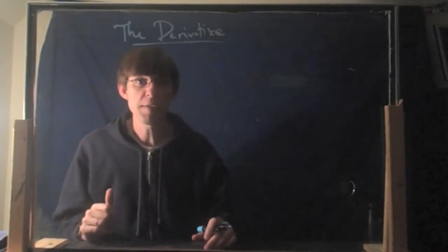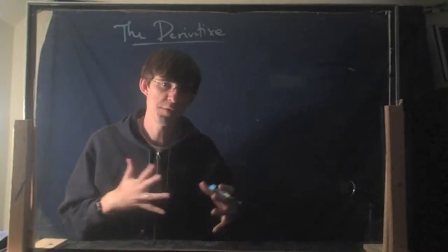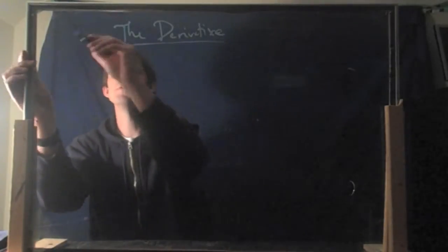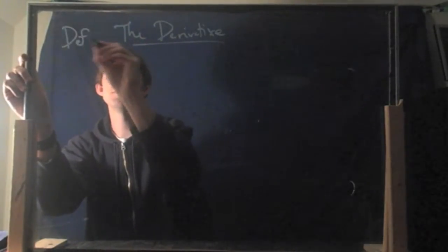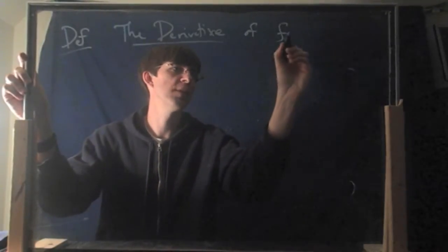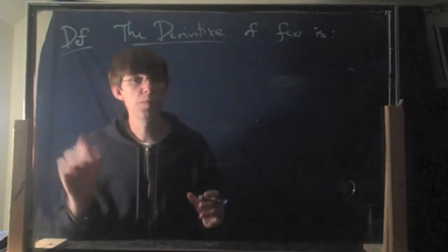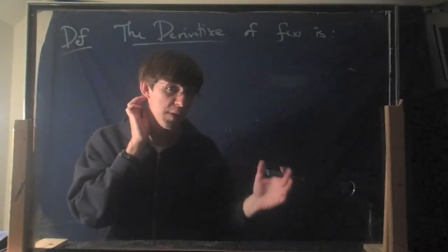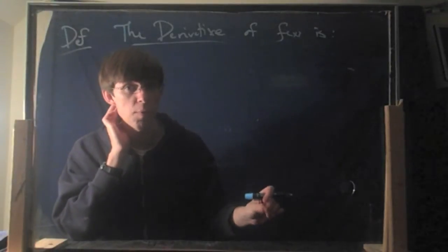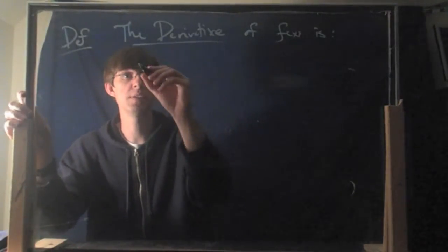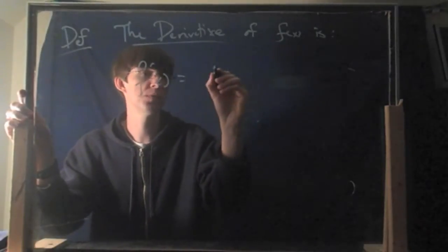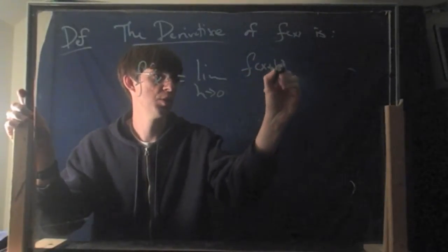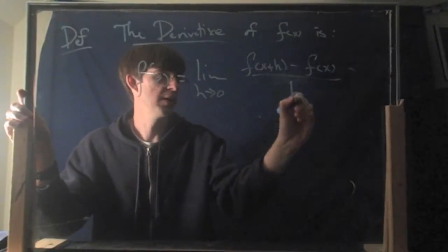Now, how could you actually find the derivative? We didn't actually compute this before — we just looked at the pattern and said probably it's going to be 2x. Let's have an actual technical definition. Here's a formula for the derivative. It's going to look just like the formula for the instantaneous rate of change, only you never plug a specific point in — you just leave the point as x. So: f prime of x equals the limit as h goes to 0 of f(x+h) minus f(x), divided by h.